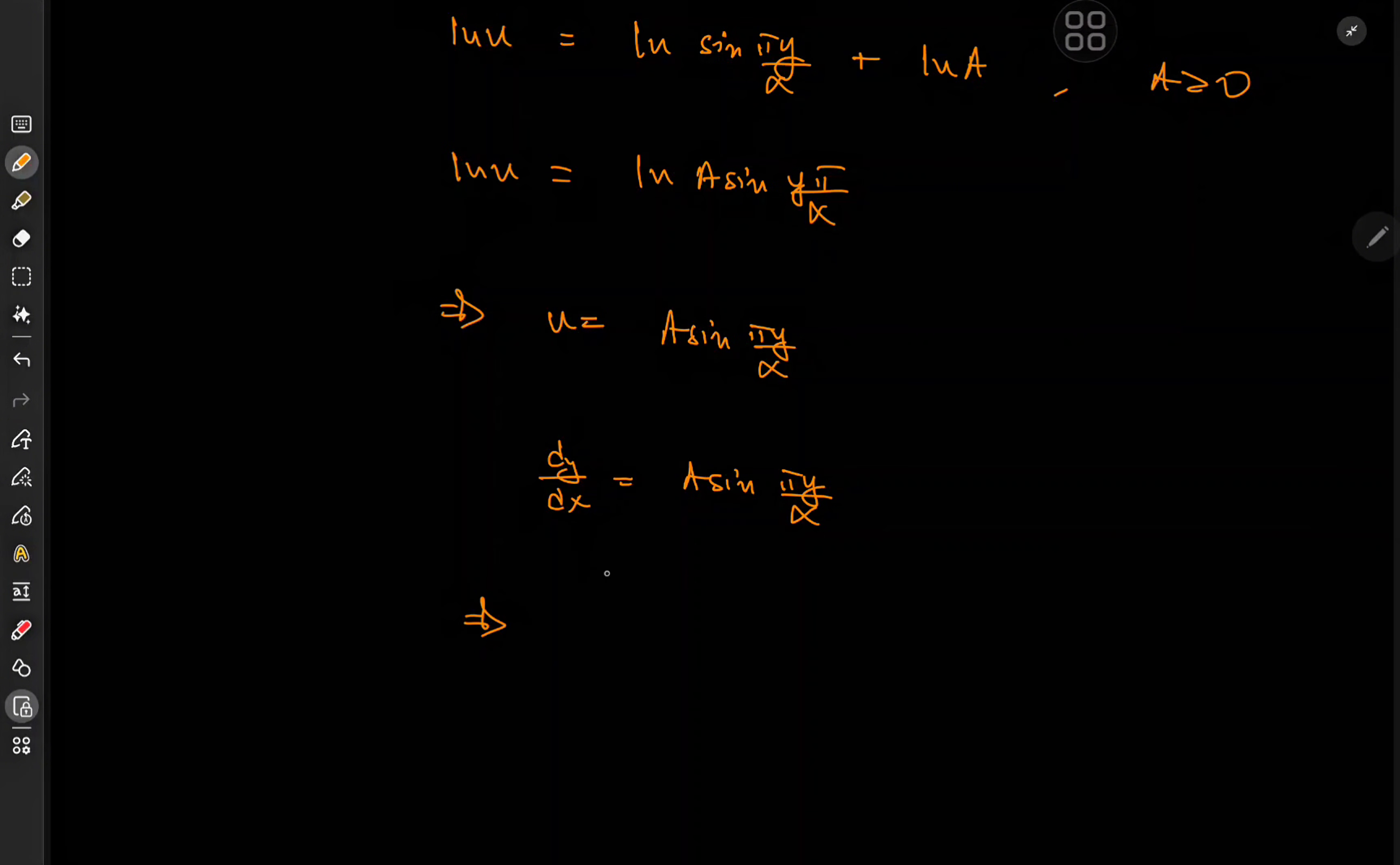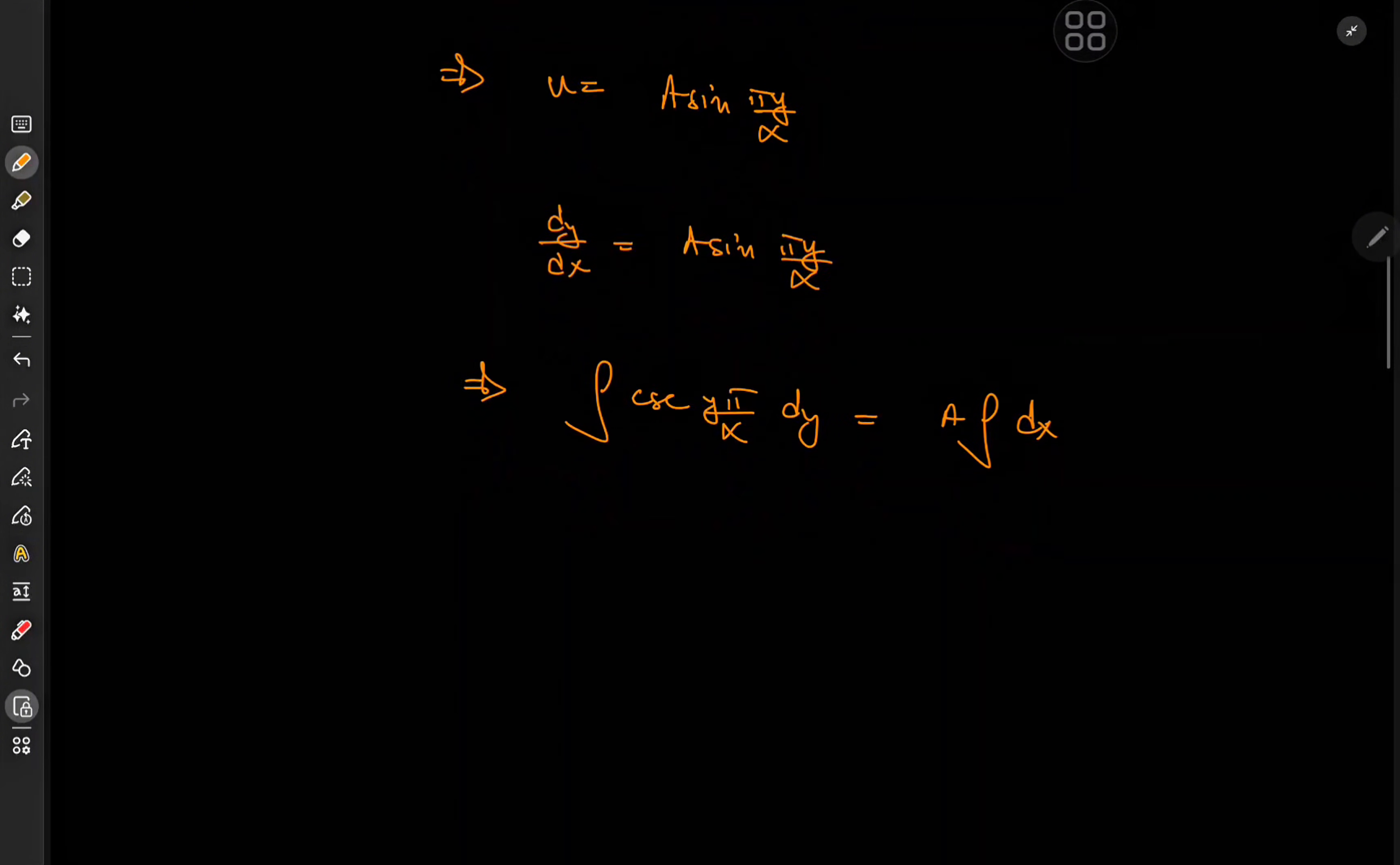another separable differential equation. So I could expand by 1 over sine. In other words, we have the cosecant of y pi over alpha dy equal to a times, I'll integrate, a times the integral of dx.